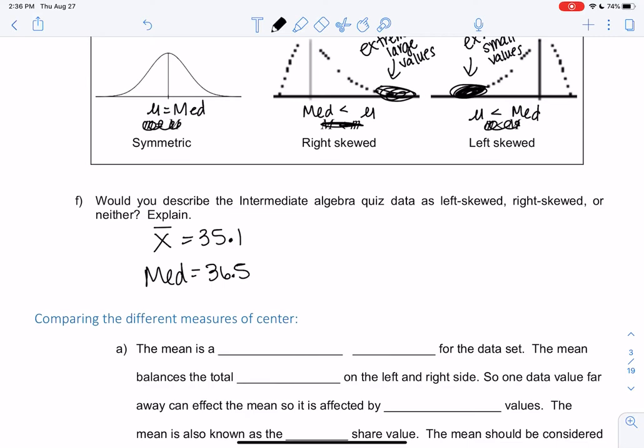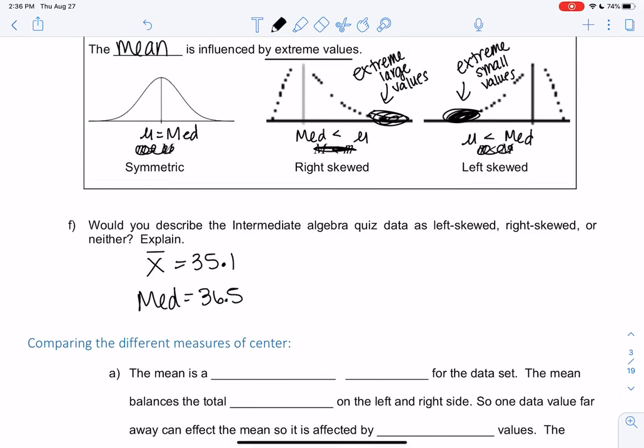In this case, the mean—we used X̄ because it was a sample—so we can use μ or X̄, depending on if it's a sample or a population. μ is for those populations. But in this case, the mean is smaller than the median. 35.1 is less than 36.5, so that just means there's a few extreme values on the left side dragging the mean down. So we would call this left-skewed.